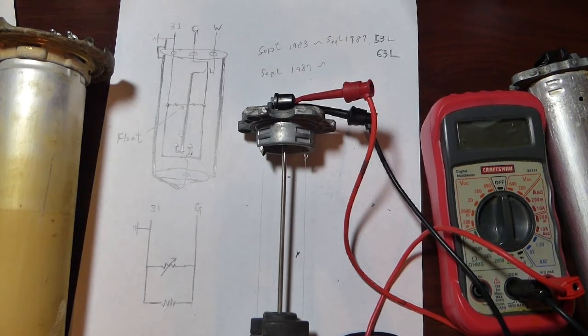The fuel level sending unit is basically just a sensor in your fuel tank that measures how much fuel is left in the tank and tells the fuel gauge how much to display.